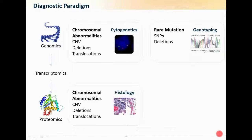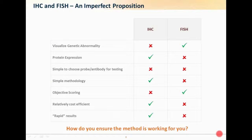Rare mutations such as SNPs or small deletions would typically be genotyped in the molecular diagnostic laboratory. For much larger chromosome abnormalities — such as gene copy number variation, large deletions, or translocations — these would be tested using cytogenetics or histology. As I'm going to be talking a lot about IHC and FISH, I thought it would be good to highlight the differences between these assays and some of the challenges you face running each.